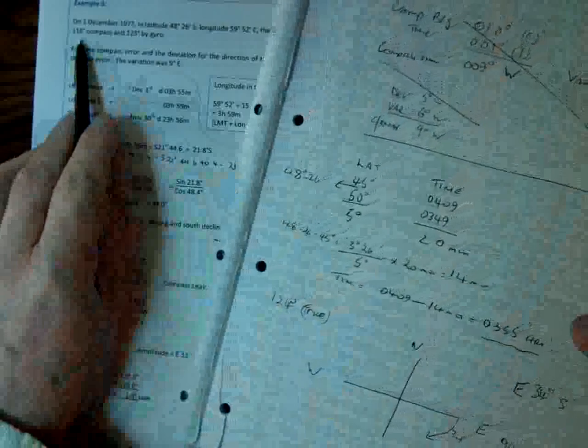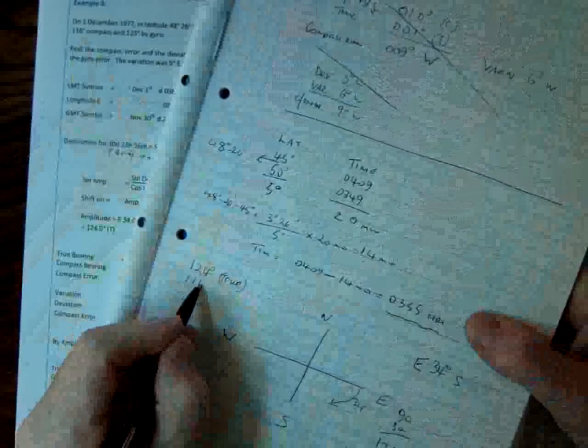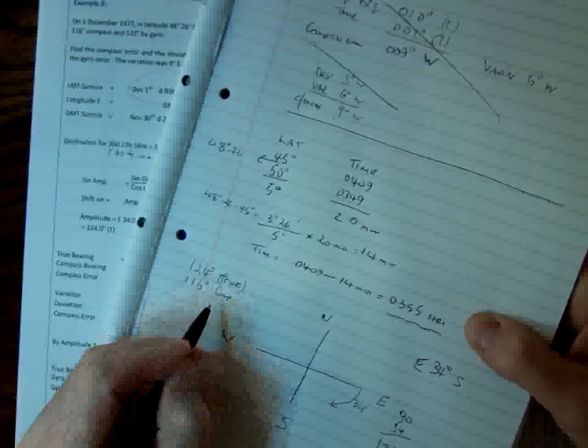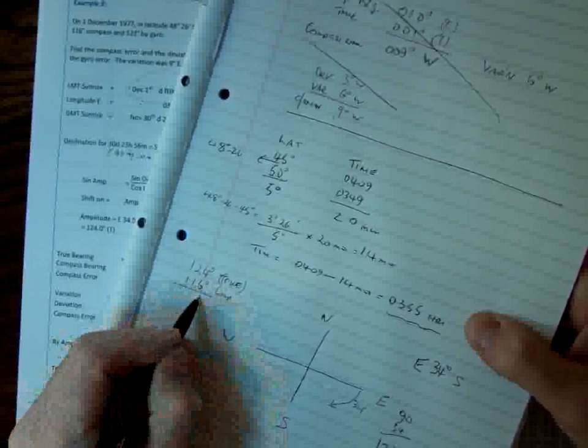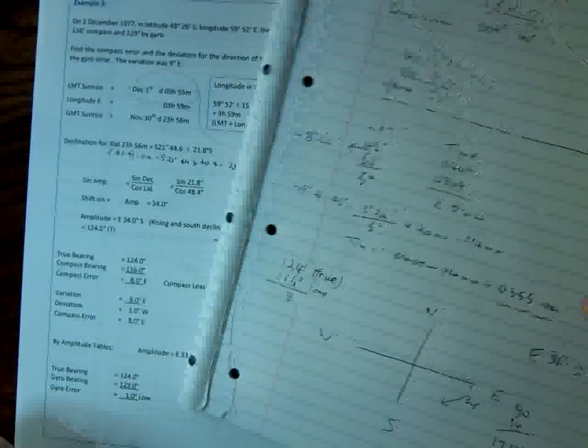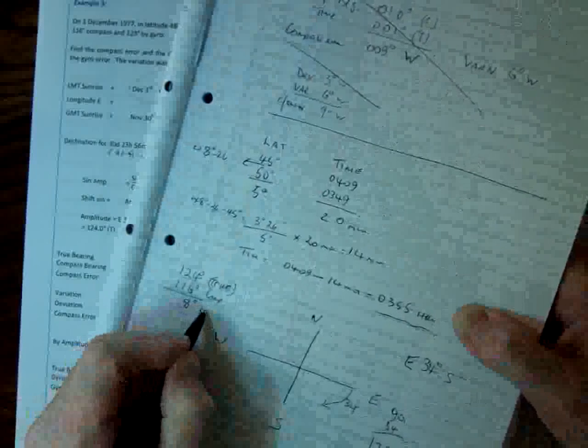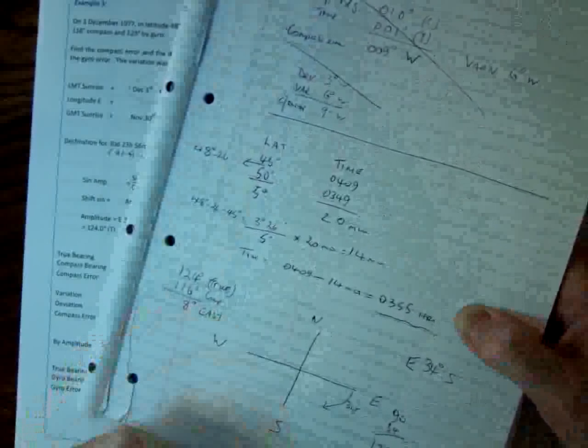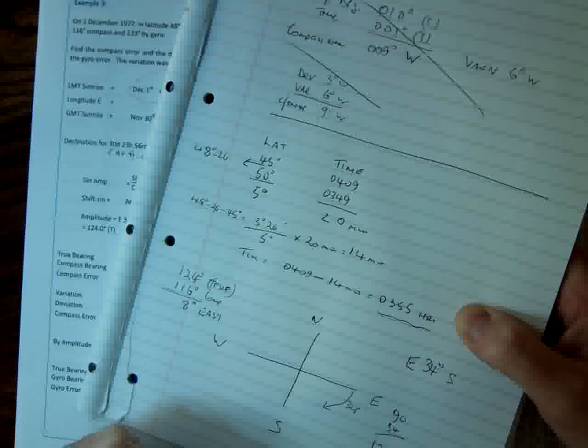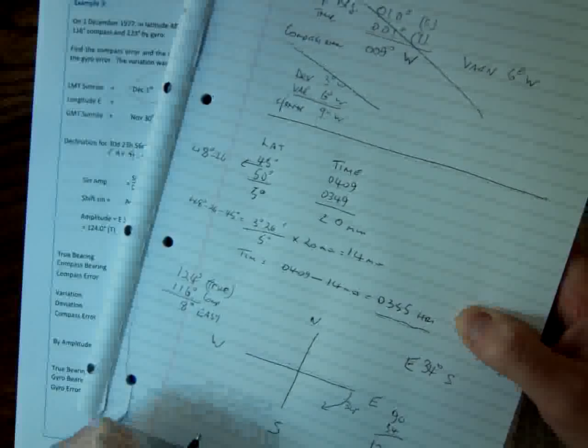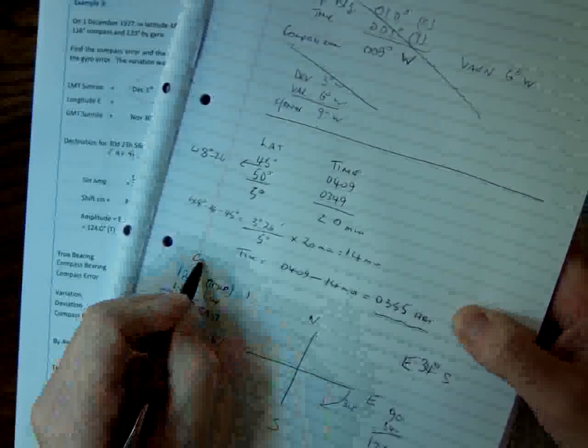Now we were told that on the ship, they've got a bearing of 116 degrees compass. So we get the difference between the two, and we find that the compass error is 8 degrees, and it's east because compass is least. 8 degrees east because compass is least. So that's the compass error, and let's have a look at the gyro one now.